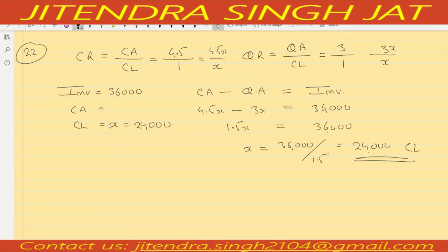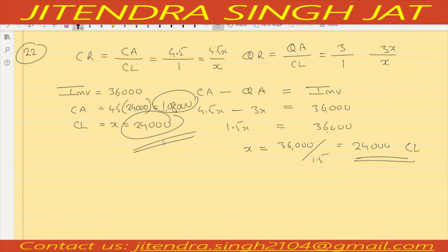Current asset is 4.5X, so 4.5 times 24,000 equals 1,08,000. Current asset is 1,08,000. I hope the question is clear to everyone.